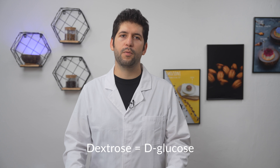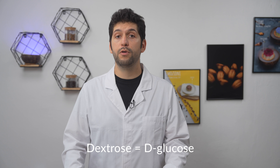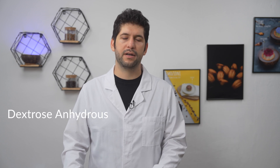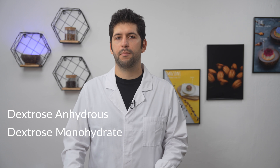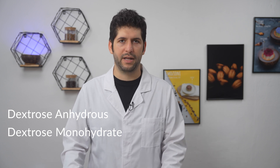Dextrose is the commercial name of glucose, or more specifically of D-glucose, which is a monosaccharide used by our body and brain as a source of energy. Industrially, dextrose is produced starting from starch, usually corn starch, but other sources can also be used like potato, wheat, tapioca and more. Commercially, we can find two types of dextrose: one is called anhydrous and another one is called monohydrate, but for the use in gelato, either of these two types can be used almost without any difference.